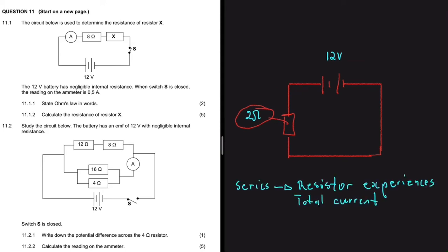Let's define what we mean when a resistor is in series. When we say a resistor is in series, the resistor experiences total current (I_total). From our power source we have the positive terminal and the negative terminal, and the current flows from positive to negative. On the 2-ohm resistor there is no current splitting, so it experiences I_total — and that is why we say it is in series relative to the circuit.